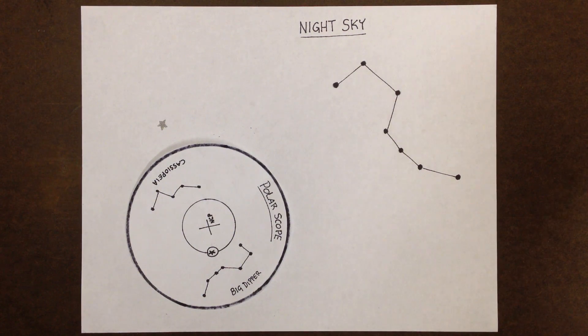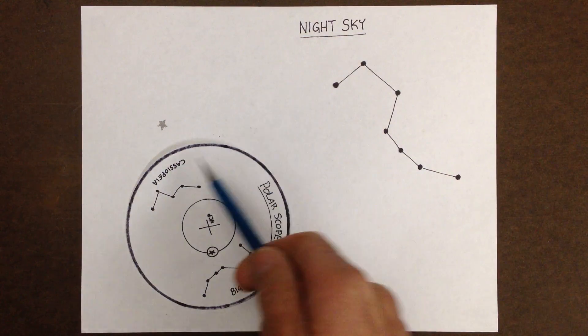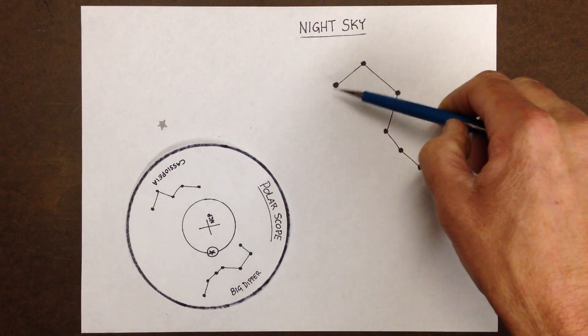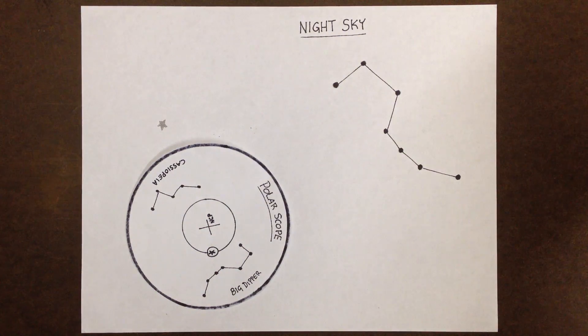For those who are out there who do not know how to use it, this is what we do. As you're looking through the polar scope itself, this is what you're going to see. This is, let's say, the night sky, and the Big Dipper's up high in the sky.